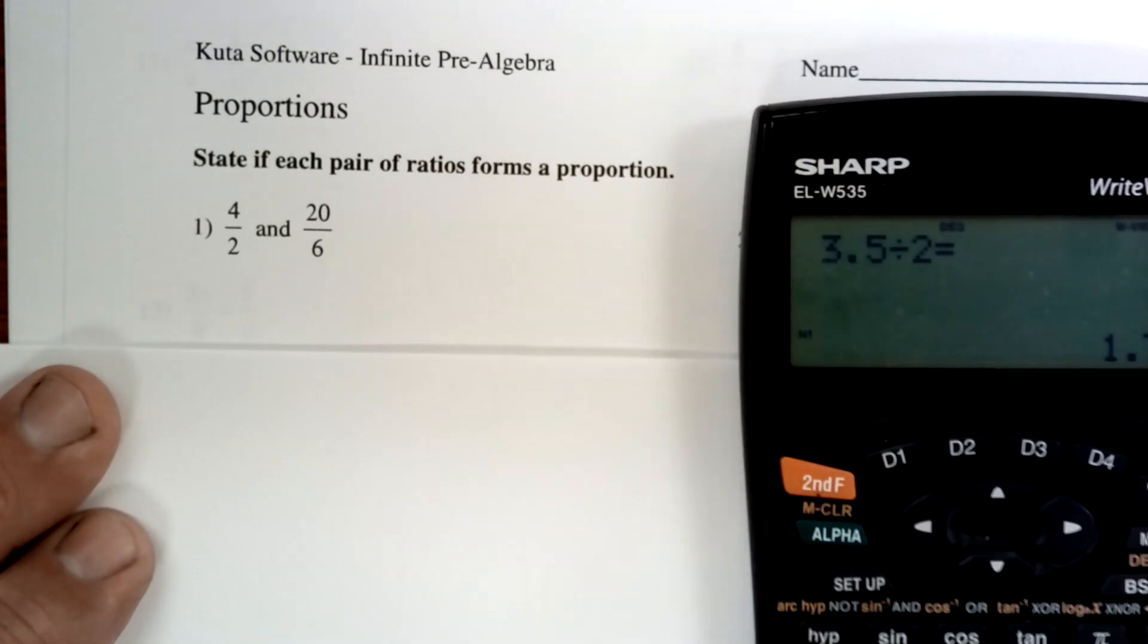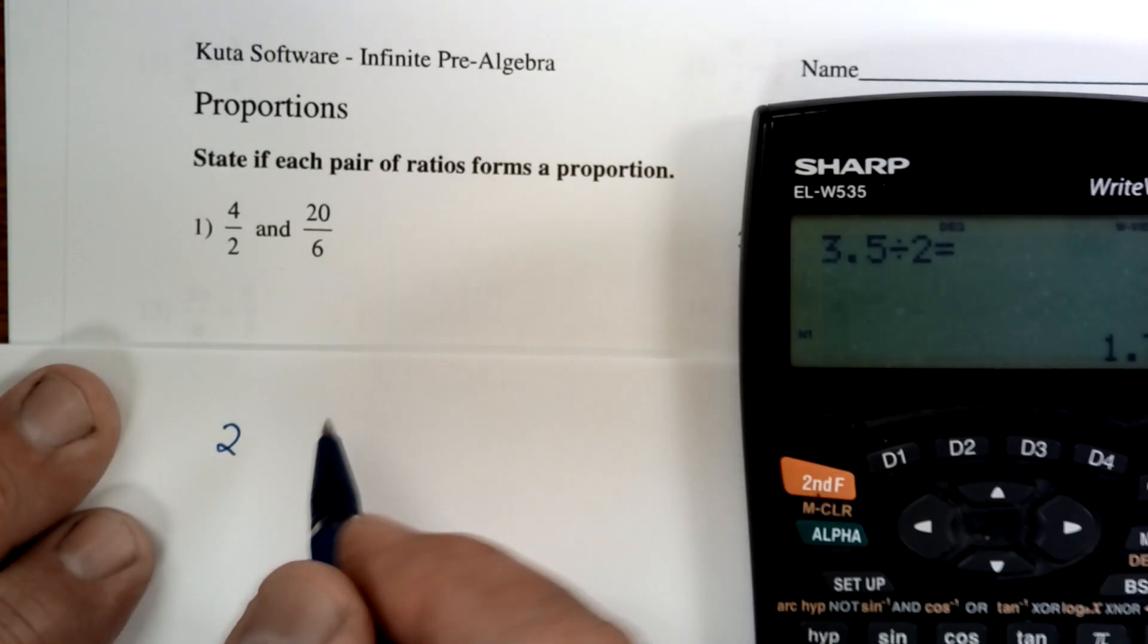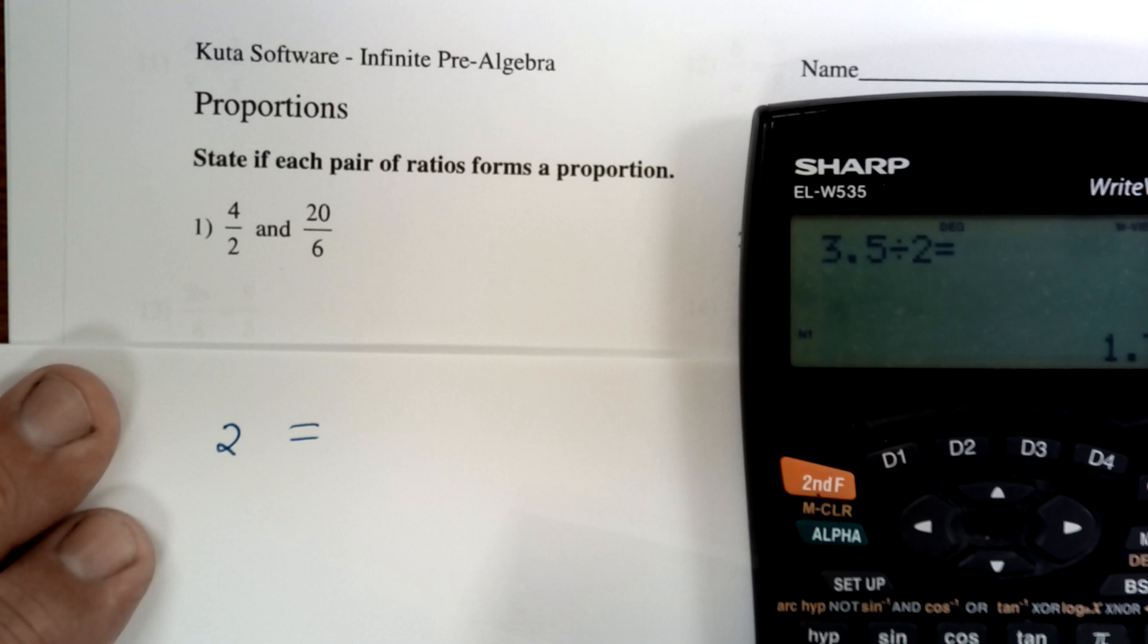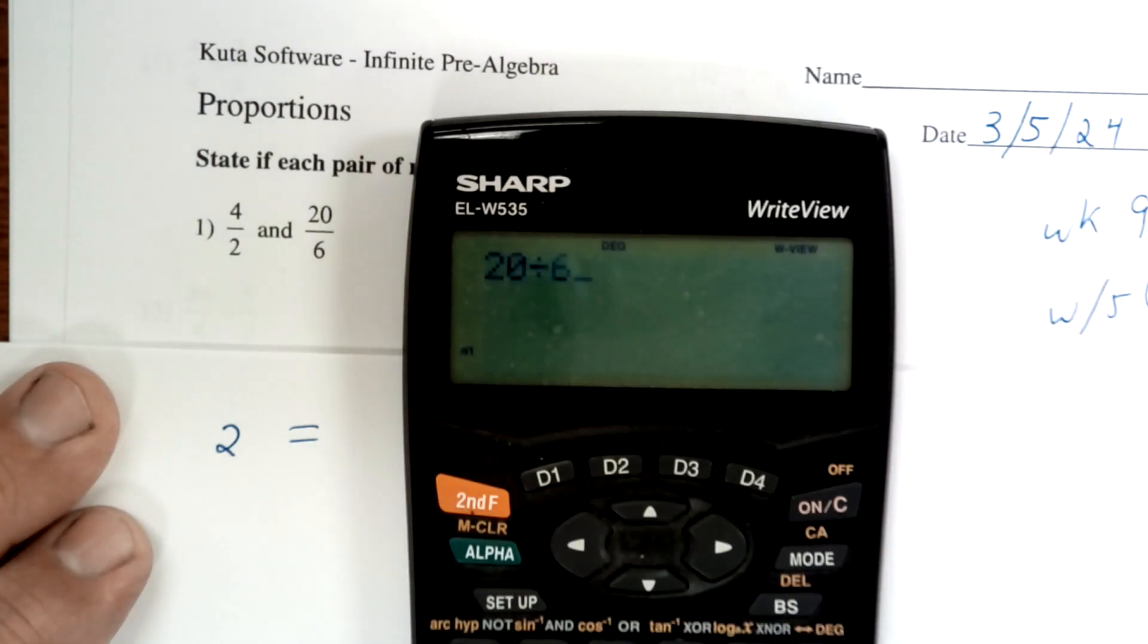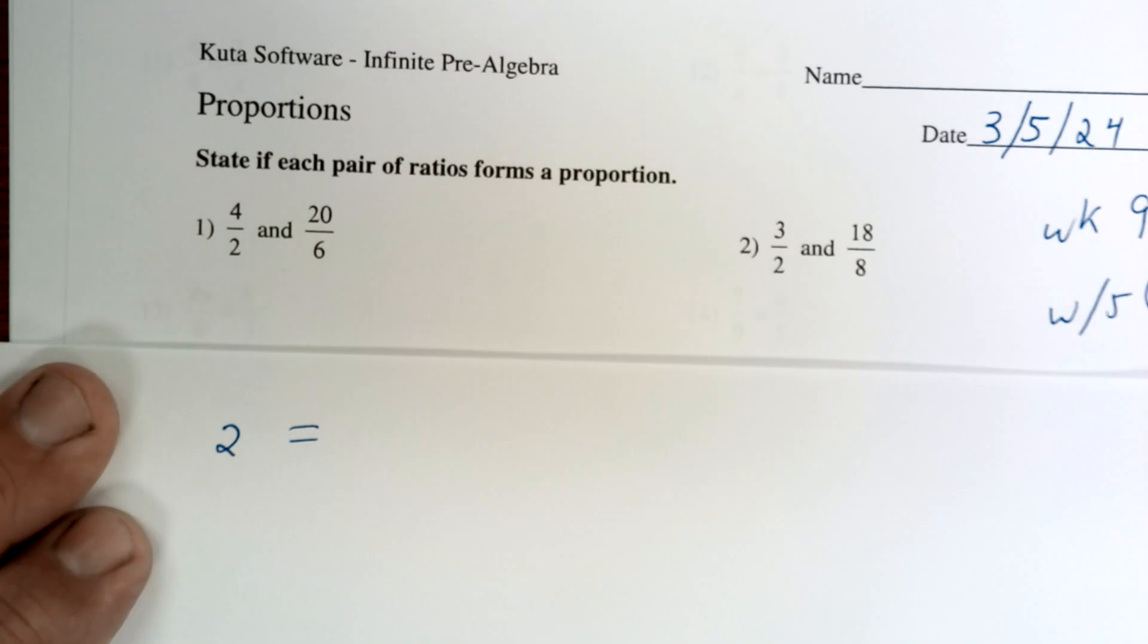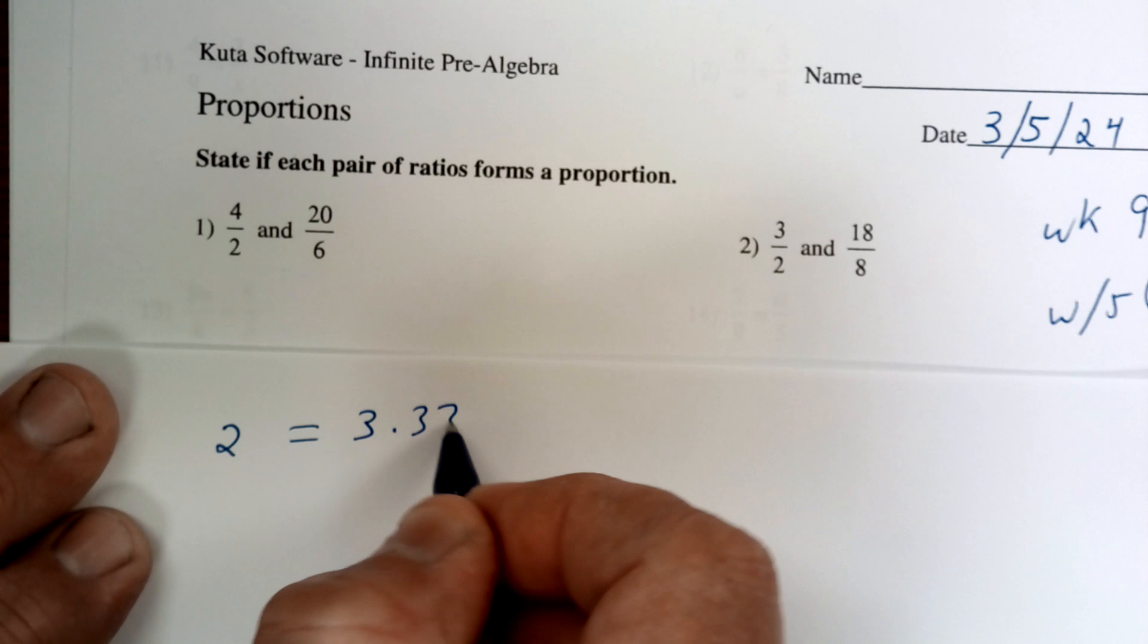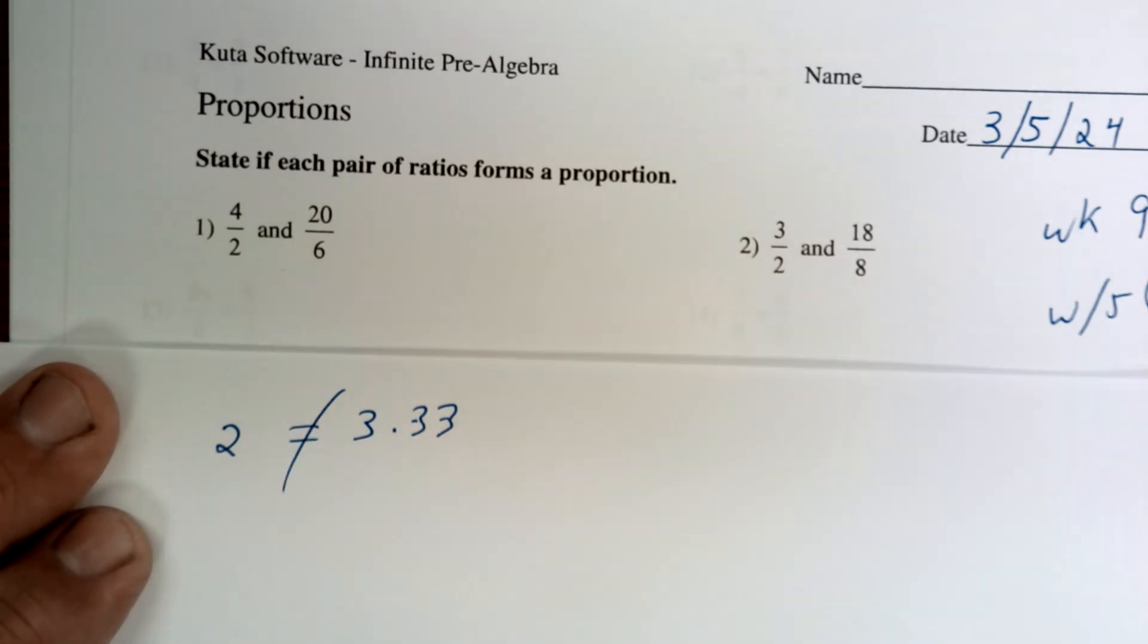You're going to take 4 divided by 2, which is 2, and see if that's equal to 20 divided by 6. So 20 divided by 6 equals 3.33.